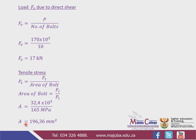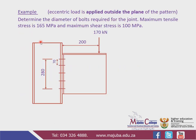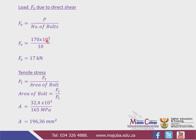Now we go to the shear load — the load Fv due to shear. The formula is: shear force per bolt equals total force divided by number of bolts. The applied load P is 170 kN. There are 5 bolts on one side and 5 on the other side, giving 10 bolts total. So Fv = 170,000 N / 10 = 17,000 N = 17 kN.